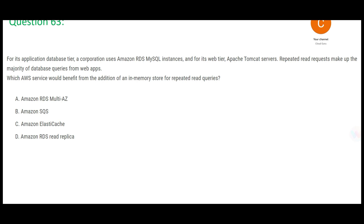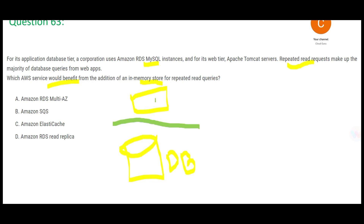Now let us look at the next question. There is an application with an RDS MySQL database and a web tier which is a Tomcat server. One important thing to note is there are repeated read requests. Always remember: if there are lots of read requests, caching helps. The question asks which AWS service would benefit as an in-memory store. Whenever you have heavy read requests, you need caching — if the data is kept in cache, the request will not go to the database. Load on the database decreases.